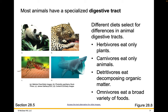Most animals have specialized digestive tracts. Different diets select for differences in animal digestive tracts. For example, herbivores eat only plants, carnivores eat only animals, detritivores eat decomposing organic matter, and omnivores eat a broad variety of food.